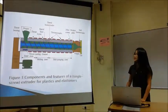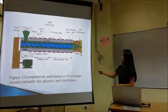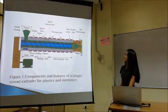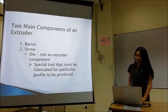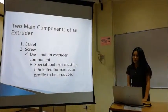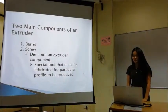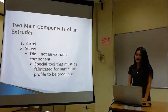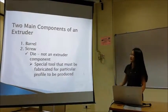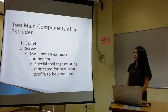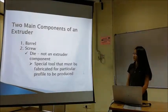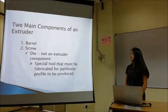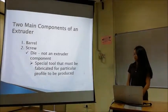This is the figure for plastic extrusion. For plastic extrusion, it contains two main components of an extruder. The first one is the barrel and the second one is the screw. The die is not counted as an extruder component.